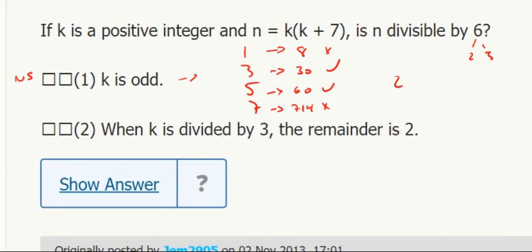You also use, to represent an odd number, you could do 2Q plus 1. That represents an odd number. So you could say it's 2Q plus 1 times 2Q plus 1 plus 7, so 2Q plus 8.